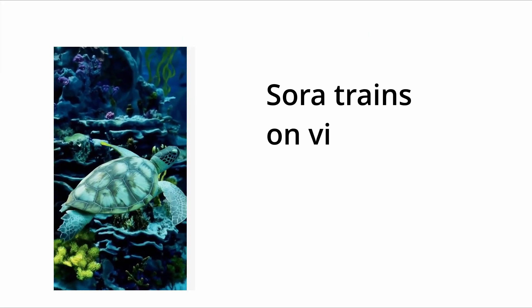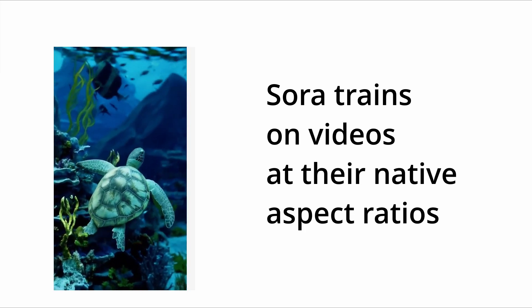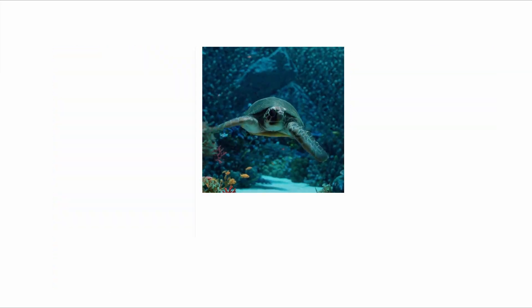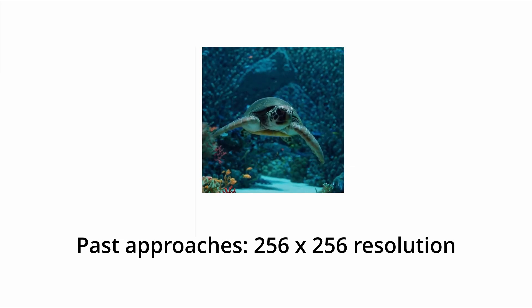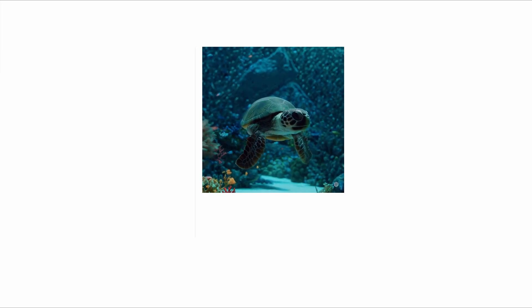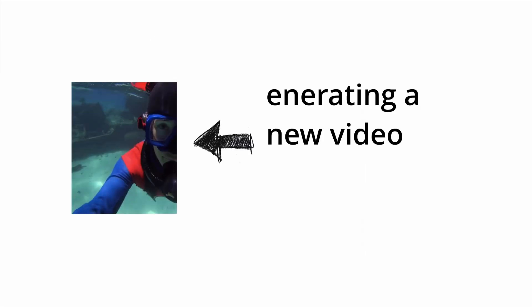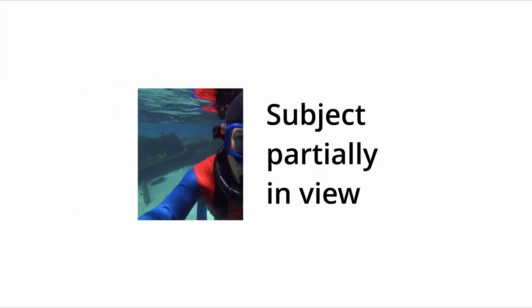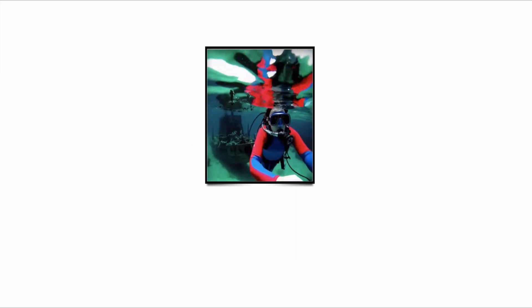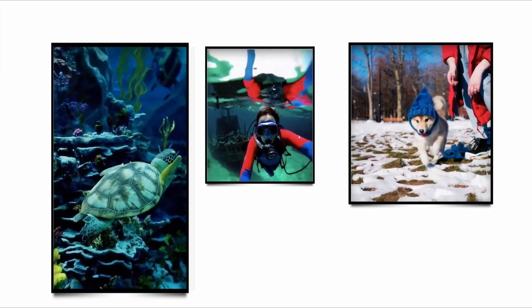Because Sora trains on videos at their native aspect ratios, the model can first prototype a video at a lower size and then generate it at full resolution as per the prompt, instead of a fixed size arbitrary video generation used in other generative models. The problem with other models is that because they train videos on a fixed size and shape — for example, cropping them as square — when generating a new video with different aspect ratios, the subject of the video is also cropped and is only partially in view. Sora, on the other hand, trains the videos on native aspect ratios so it can generate videos with better composition and framing for any devices.